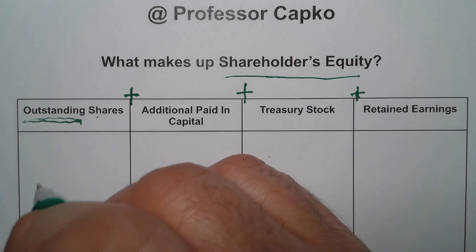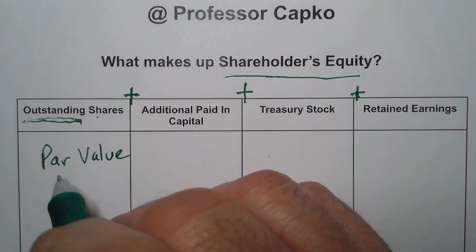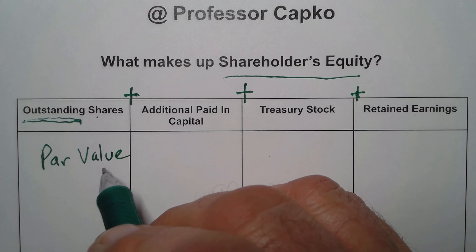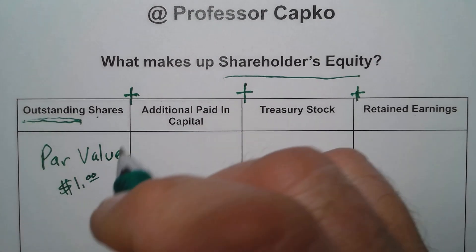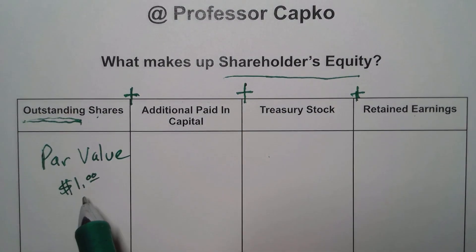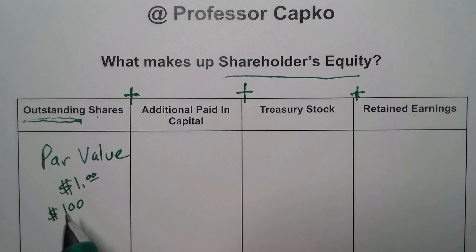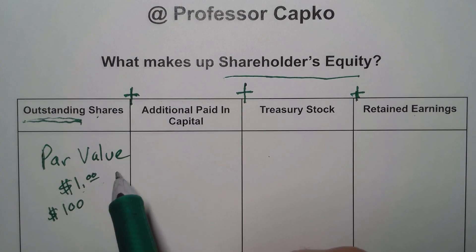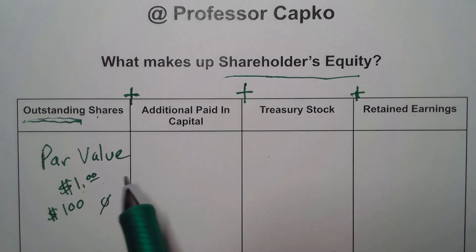The key is that outstanding shares are valued at par value. Par value is the nominal value assigned in the charter — it doesn't have anything to do with the actual market value of the share. Often a corporation will have $1 par value stock, so if 100 shares of par value stock are outstanding, this account would have $100 listed. It doesn't necessarily match market value. Also, it is legal to have zero par value stock, in which case this column would show zero.